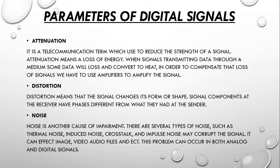Attenuation is a telecommunications term referring to the reduction of the strength of a signal. It means a loss of energy — when signals transmit data through a medium, some energy is lost and converted to heat. To compensate, amplifiers are used to amplify the signal. Distortion means the signal changes its form or shape. Signal components at the receiver have different phases from what they had at the sender. This problem occurs in composite signals made with different frequencies.